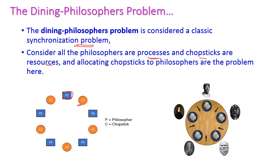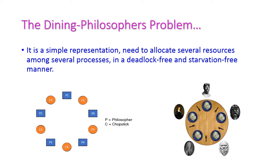To allocate chopsticks to all the processors, we would require 10 chopsticks, because a philosopher requires 2 chopsticks to eat, but here we have only 5 chopsticks. So how do we allocate these chopsticks to the philosophers? For example, if we allocate 2 chopsticks to philosopher 1, then the next one who can eat is either philosopher 3 or philosopher 4, because simultaneously we cannot allocate chopsticks to all the philosophers. We need to allocate several resources among several processes without deadlock and without starvation. The dining philosopher problem is a very good example for allocating resources without deadlock and without starvation.